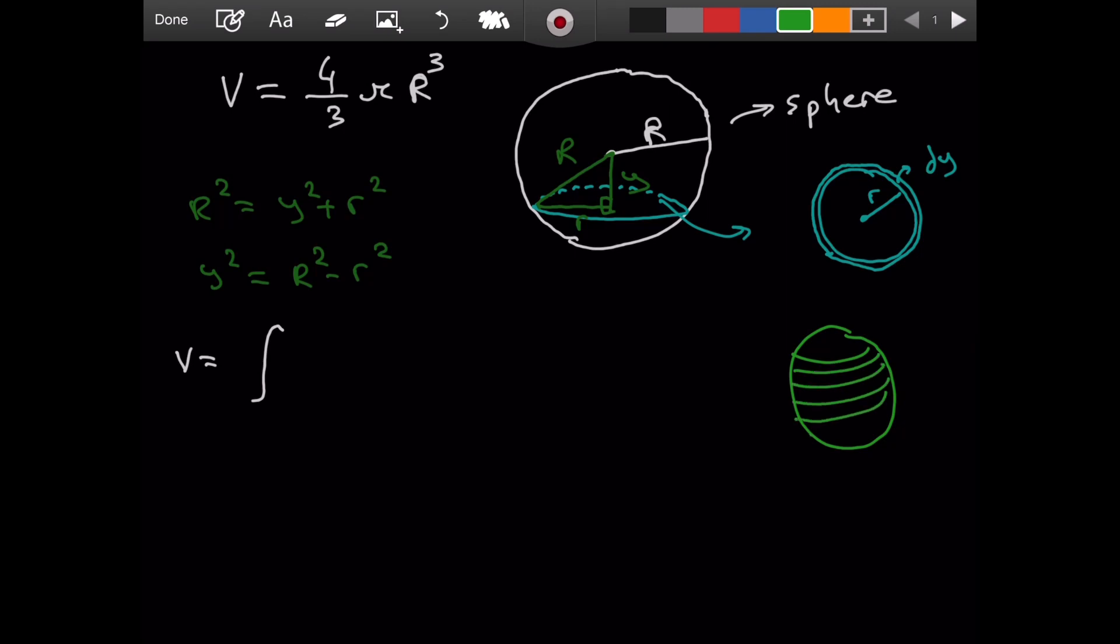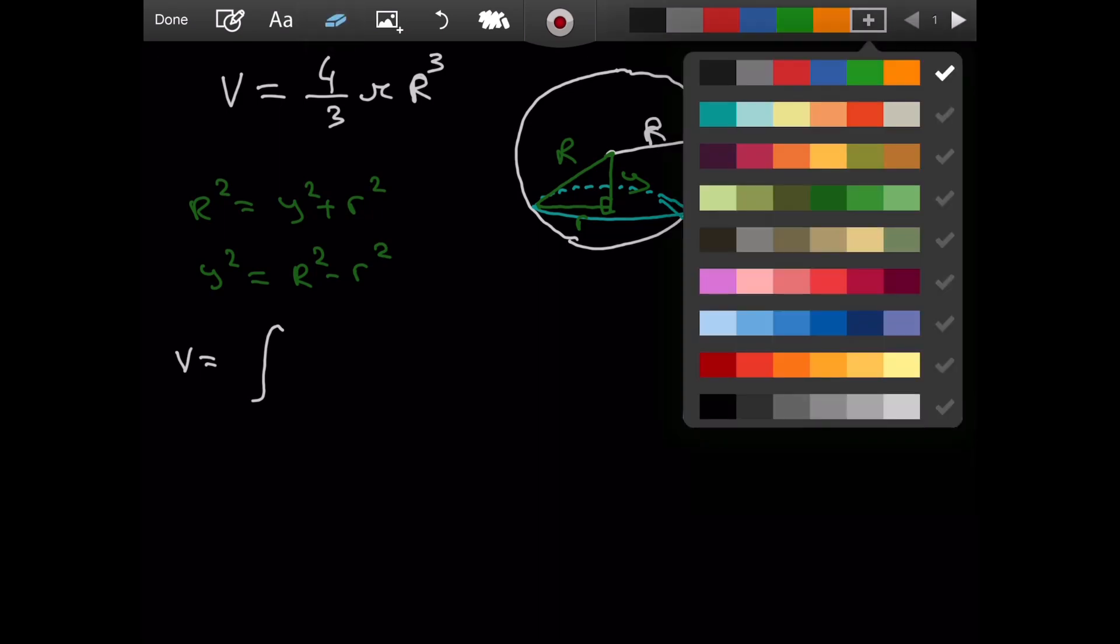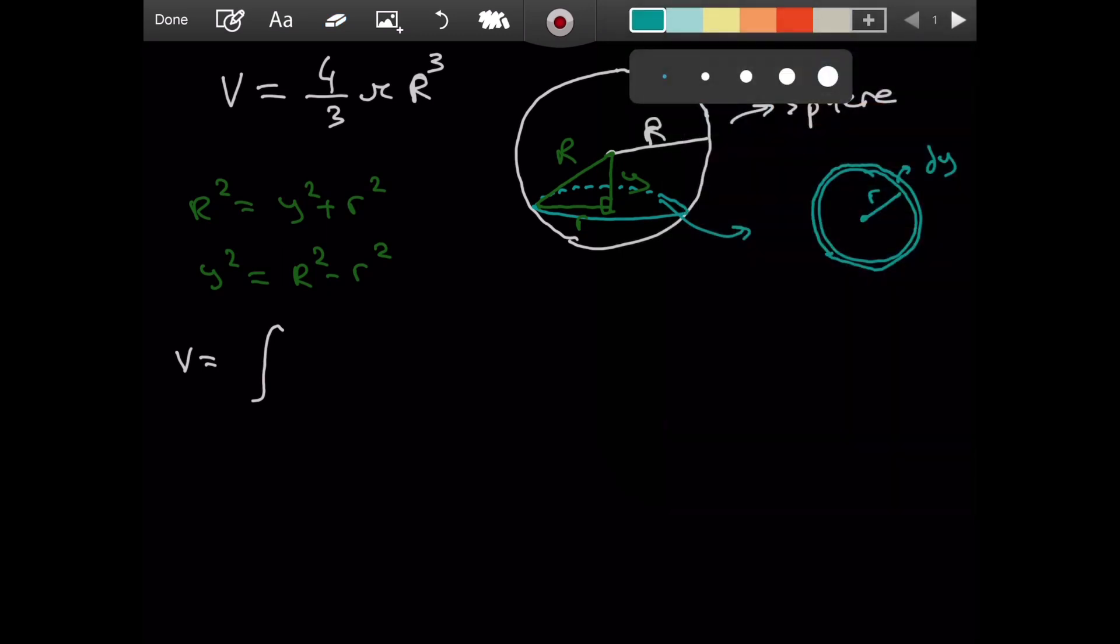And then when you have that watermelon, you are slicing pieces like this. As you can see, when the sliced pieces are put on top of one another, they will form the watermelon again. That means if we add all the infinitesimal volumes of these slices, we will get the whole volume. So, what would the expression be using an infinitesimal circle?